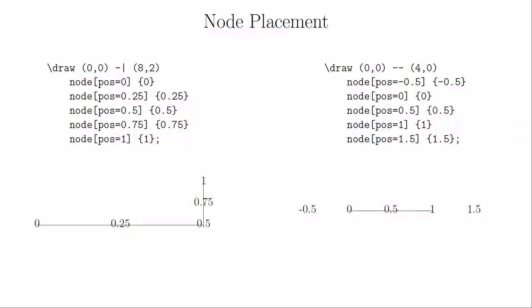If you choose numbers outside of the interval from 0 to 1, LaTeX will extrapolate the position based on the path. Note that this does not work with the to command.